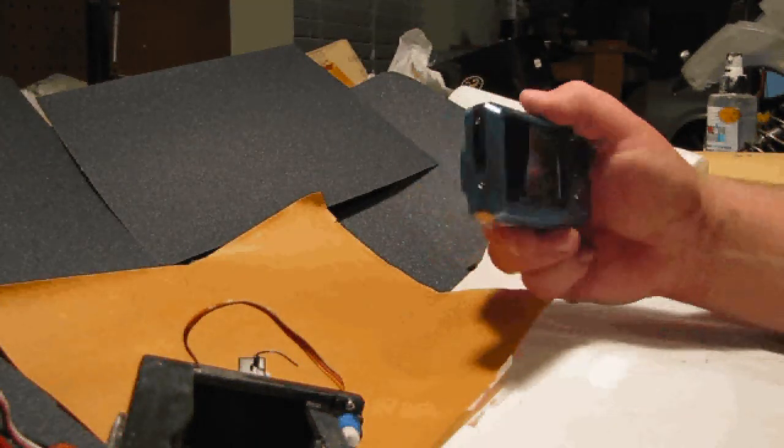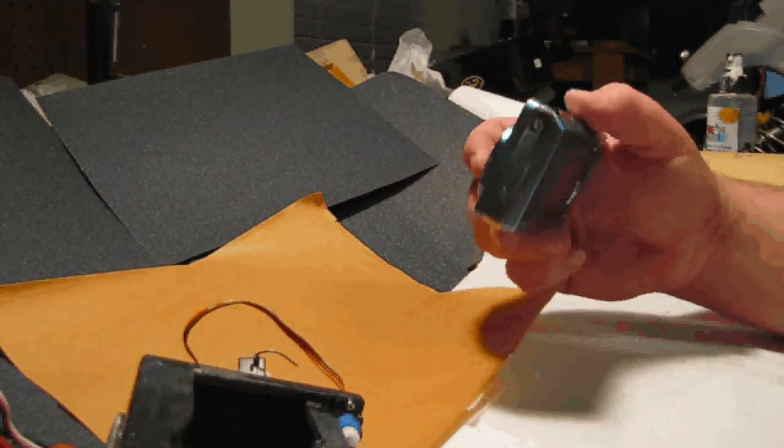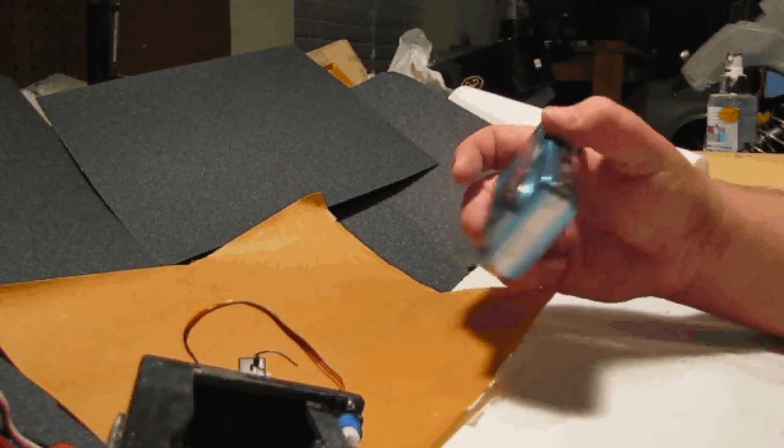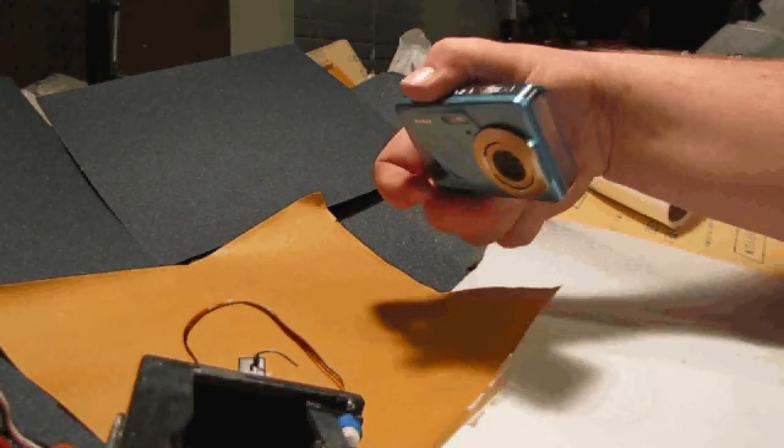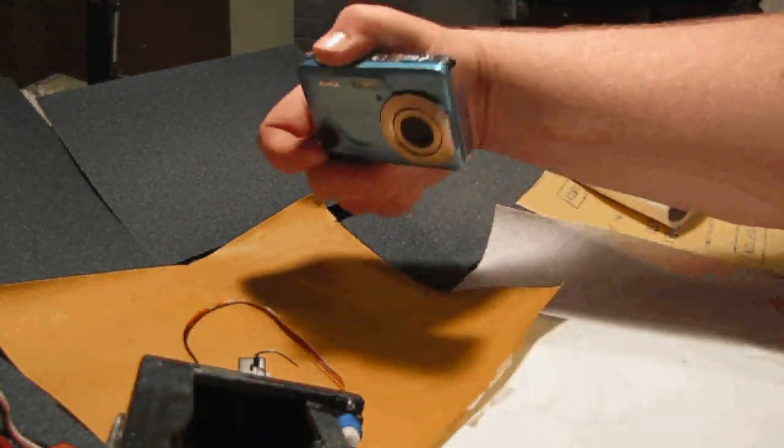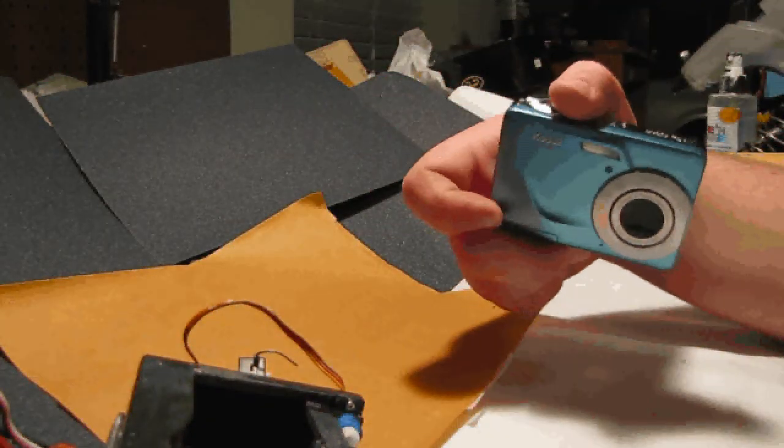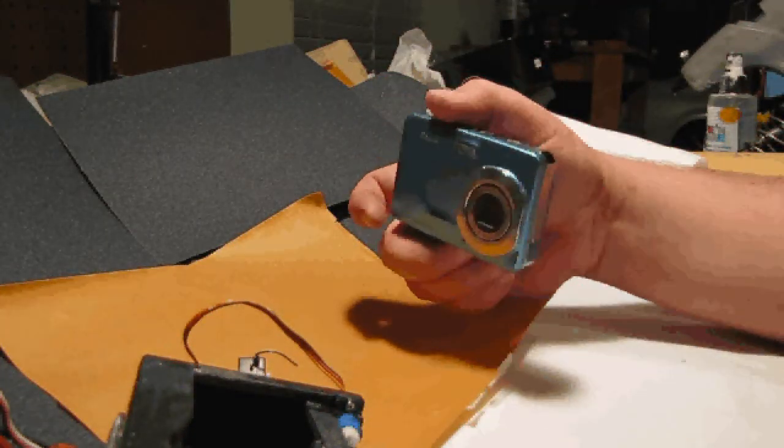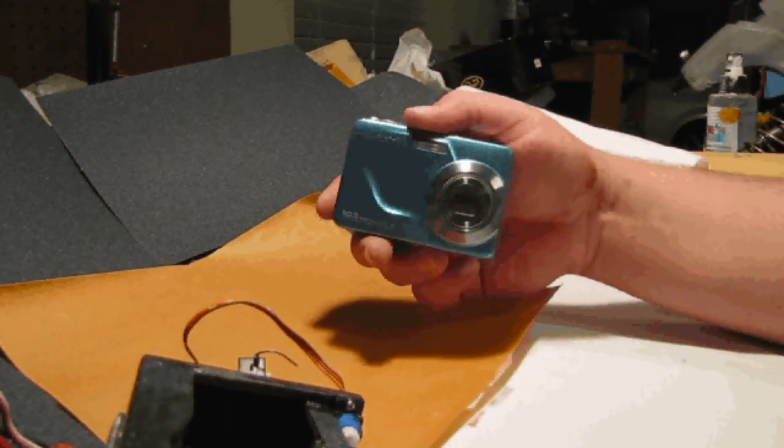It's going to be wing mounted, basically taking pictures perpendicular to the fuselage off the side of the wing like that as it's flying moving forward. It was important that the camera had a burst mode and infinity focus for taking these pictures.